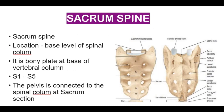The sacrum is the spinal section located at the basal level of the spinal column and is the second-to-last part of the spinal cord. It is a bony plate at the base of the vertebral column, labeled from S1 to S5. The pelvis is connected to the spinal column at the sacrum section. A total of five bones are fused here.